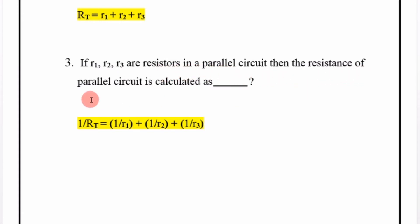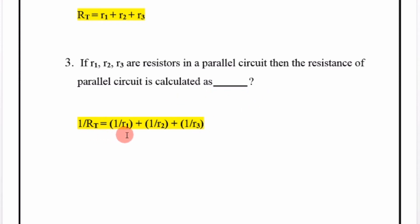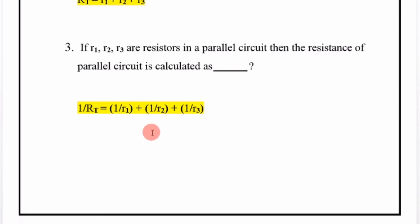If R1, R2, R3 are resistors in a parallel circuit, then the resistance of the parallel circuit is calculated as: 1 over RT is equal to 1 over R1 plus 1 over R2 plus 1 over R3.